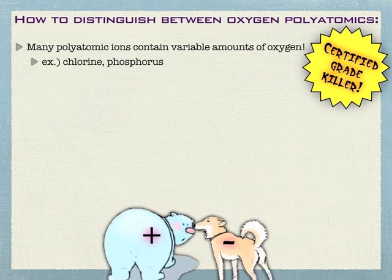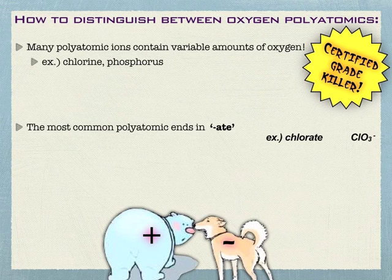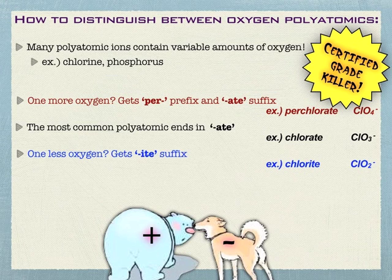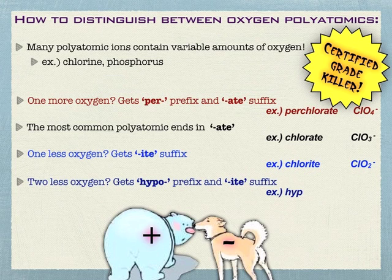Don't break up the polyatomics. One of the things you really have to know is how to distinguish between different polyatomics that have different numbers of oxygen. The most typical polyatomic containing oxygen gets the ending -ate. For example, chlorate is ClO₃⁻. If it has one more oxygen than that, it gets the prefix per-, so perchlorate is ClO₄⁻. One less oxygen would be -ite, so chlorite is ClO₂⁻. And two less would be hypo- -ite, so hypochlorite is ClO⁻. Notice the charge didn't change — just the number of oxygens.